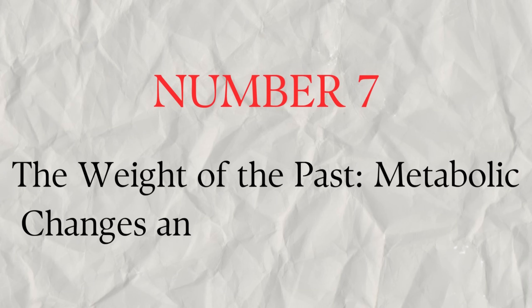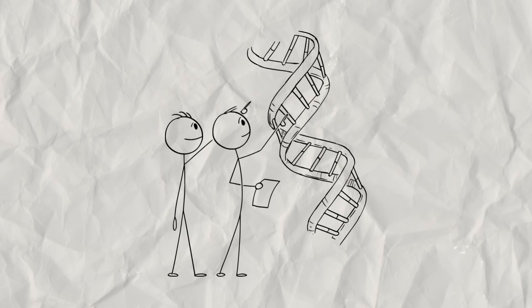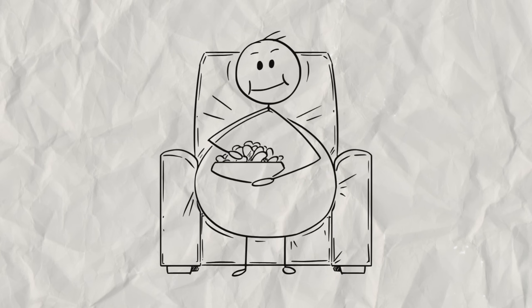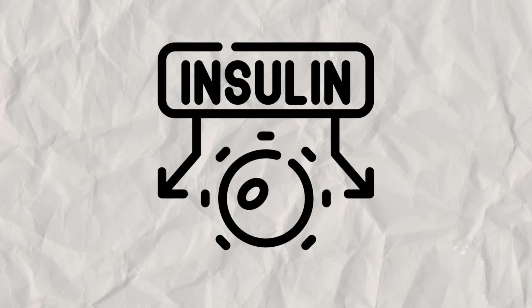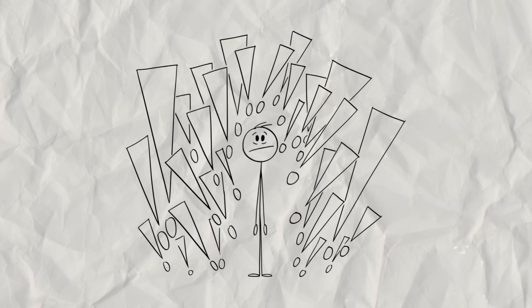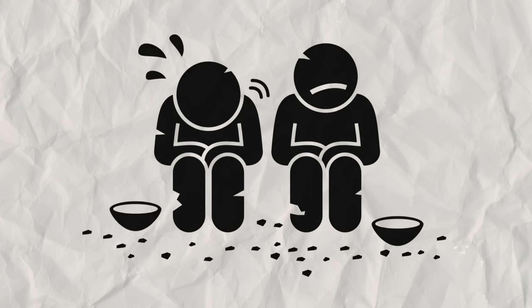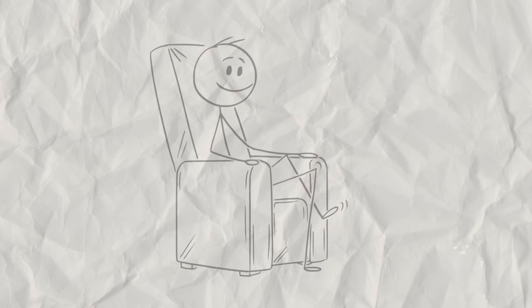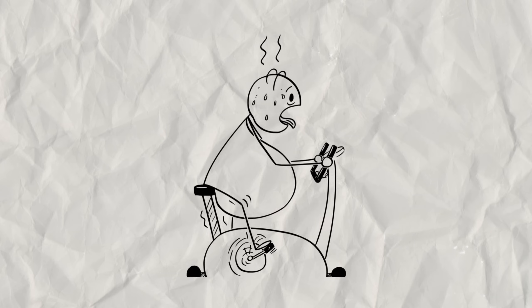Number seven. The weight of the past. Metabolic changes and chronic conditions. The hormonal and inflammatory changes induced by trauma can significantly impact your metabolism. This can lead to difficulties with weight management, an increased risk of developing type 2 diabetes, and other metabolic syndromes. Your body, perceiving a constant state of emergency, may prioritize fat storage and resist burning energy, a primitive survival mechanism for times of famine. But in the modern world, this often translates to stubborn weight gain and a dysregulated metabolism. It's another subtle, yet profound way that the echoes of your past can manifest physically, making it harder to maintain optimal health despite your best efforts.